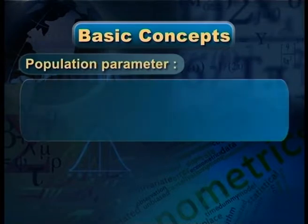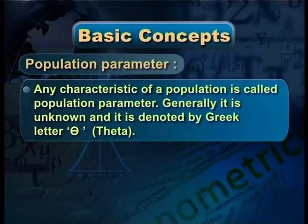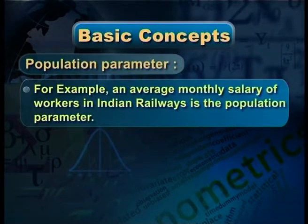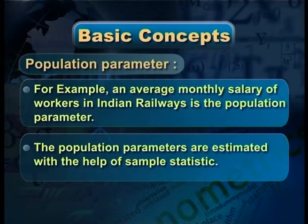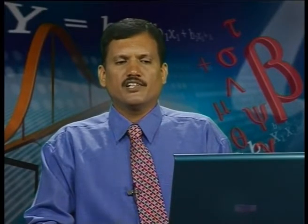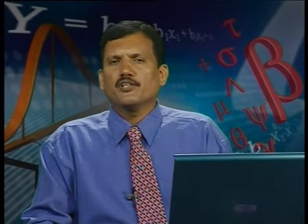Population parameter: any characteristic of a population is called population parameter. Generally it is unknown and is denoted by Greek letter theta. For example, the average monthly salary of workers in Indian railways is the population parameter. The population parameters are estimated with the help of sample statistic. If we want to find out the average monthly salary of workers in Indian railways, we have to go to each and every worker and find out their salaries — that is a very difficult task. Therefore, the population parameter is generally unknown.